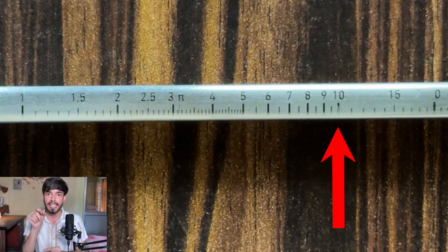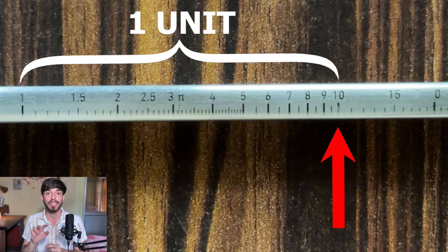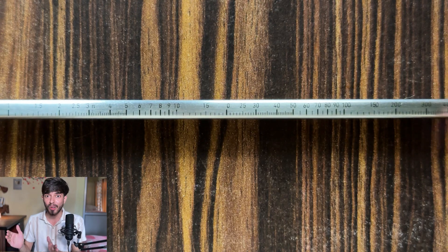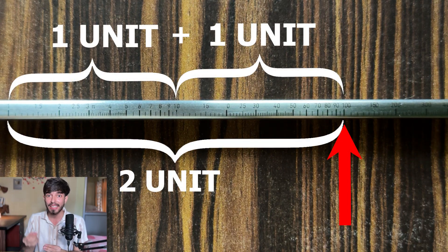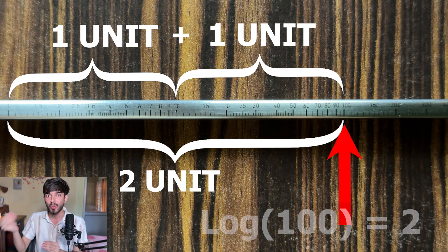So log base 10 of 10 is 1. So this 10 you are seeing on this scale corresponds to 1 unit length on this scale. Now can you tell me what number would be at 2 unit length? If you said 20, you are completely wrong. It's 100. Because log base 10 of 100 would be 2. Because 10 raised to the power 2 is 100.